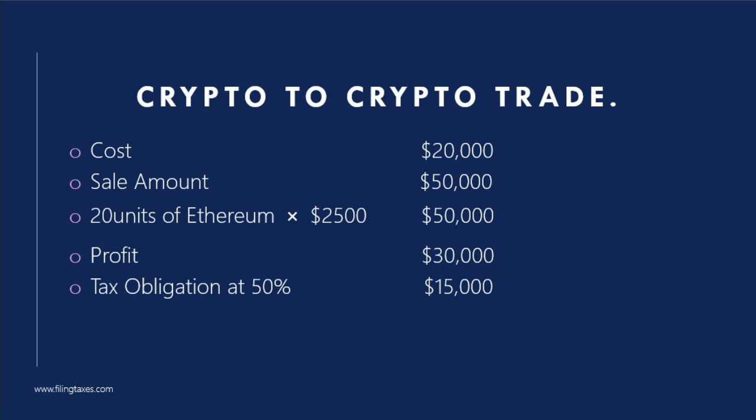Let's consider Tony, who bought one Bitcoin for twenty thousand dollars, now valued at fifty thousand dollars. Tony is a full-time day trader in the highest tax bracket, facing a fifty percent marginal tax rate. Trading his Bitcoin for twenty units of Ethereum, each worth twenty-five hundred dollars, results in thirty thousand dollars of business income and fifteen thousand dollars in personal income tax.